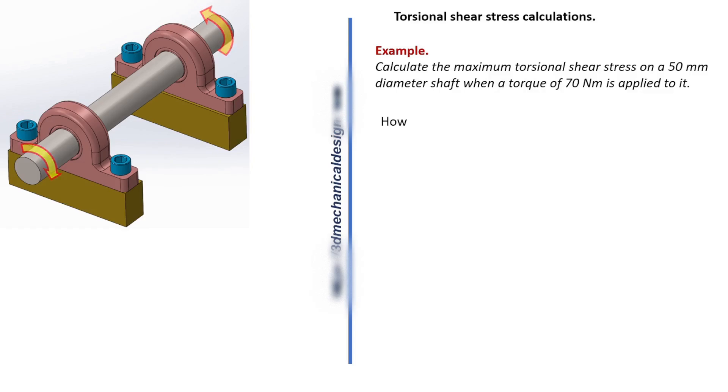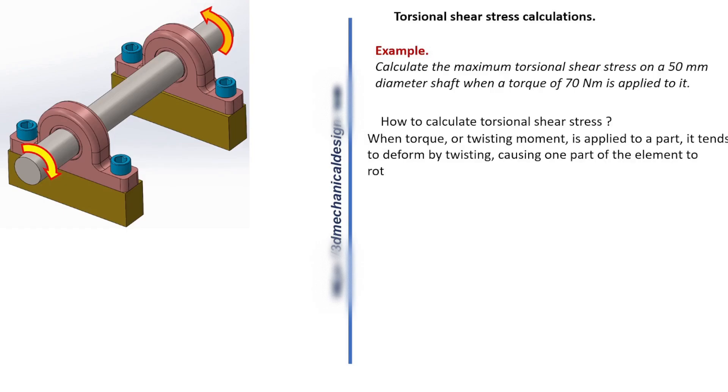How to calculate torsional shear stress. When torque, or twisting moment, is applied to a part, it tends to deform by twisting, causing one part of the element to rotate relative to the other. Such twisting induces shear stress in the element.